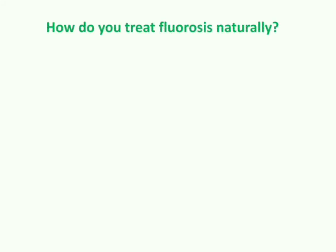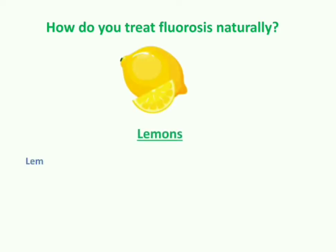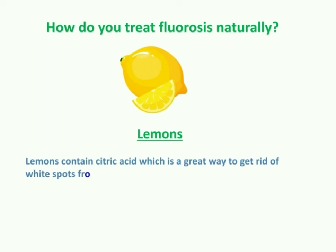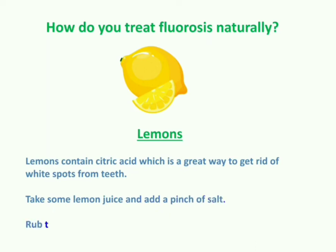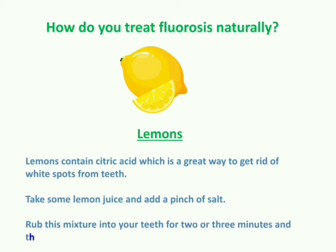How will you treat fluorosis naturally? The answer is lemons. Lemons contain citric acid, which is a great way to get rid of white spots from the teeth. Take some lemon juice and add a pinch of salt. Rub this mixture into your teeth for 2 to 3 minutes and then rinse with water.